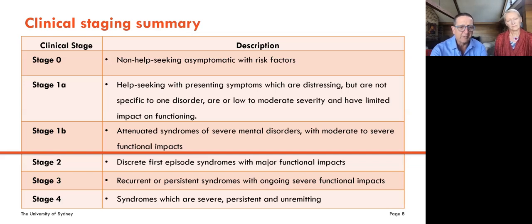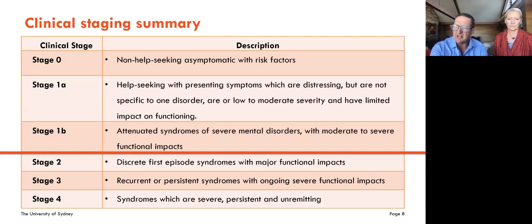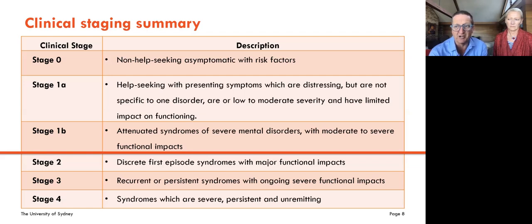We differentiate stage 1A and 1B because of differential rates of progression to stages two and above. Stage 1A are those who are help-seeking, typically with low levels of anxiety, depression, distress — may have suicidal thoughts and behaviours, but low degrees of concurrent impairment. One of the groups we are most interested in are the stage 1B, which we refer to as attenuated syndromes. In many other classification systems, particularly in psychosis, people talk about those at risk, as if the person doesn't already have anything. At risk in this model is actually stage zero — preventing the onset entirely. Stage 1B are people with real syndromes with already moderate to severe functional impairments.